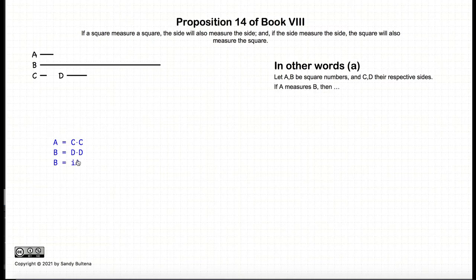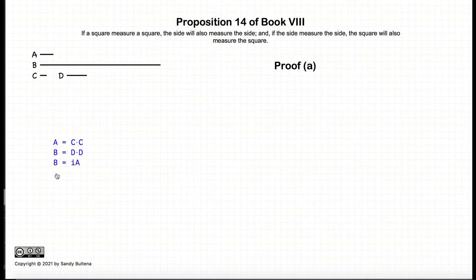And the first part of this proposition states that if A measures B, then C measures D. Or conversely, if C measures D, then A measures B. And that is the proposition that we need to demonstrate.